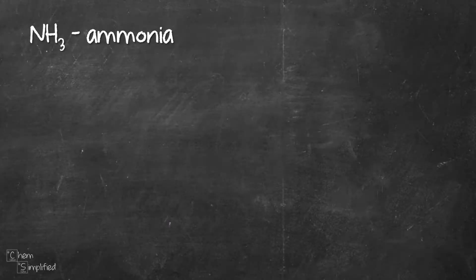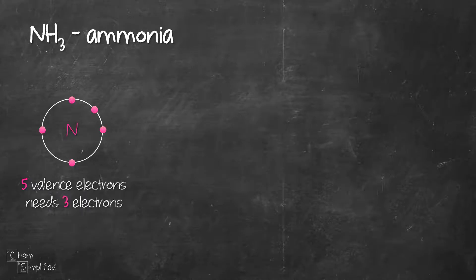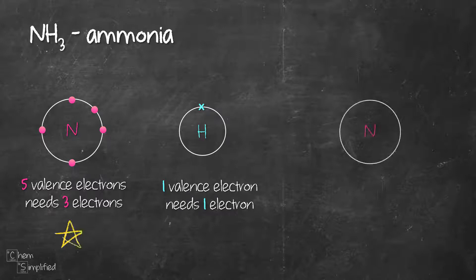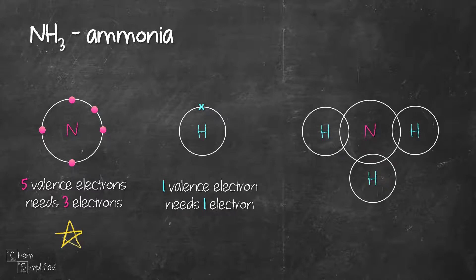Let's work on ammonia next. Nitrogen has five valence electrons and it's going to need three more in order to achieve octet. Hydrogen has one and needs one more electron. Since nitrogen needs more electrons, we're going to place it in the center and surround it with three hydrogens. Each atom is going to share one electron to make a single bond between nitrogen and hydrogen.